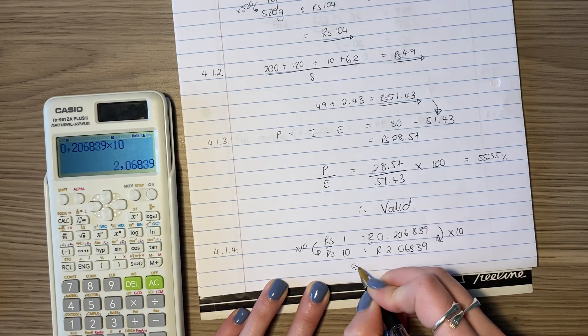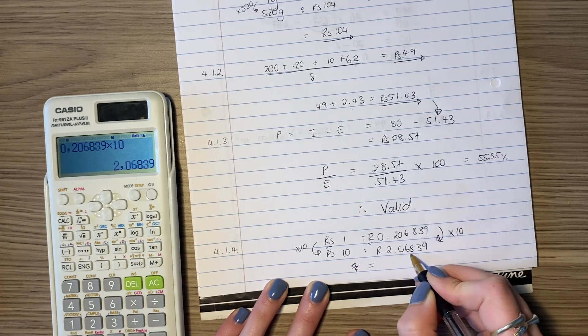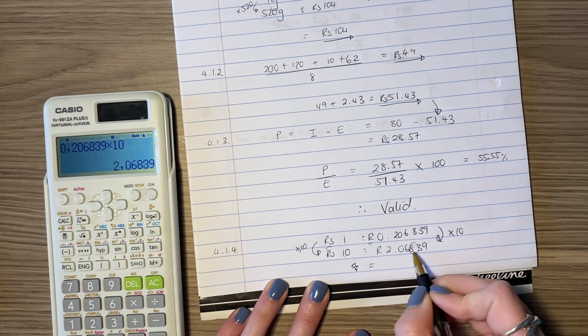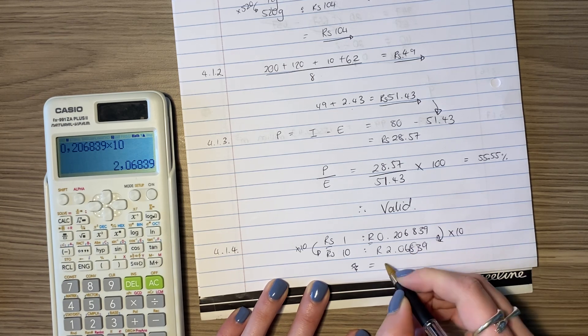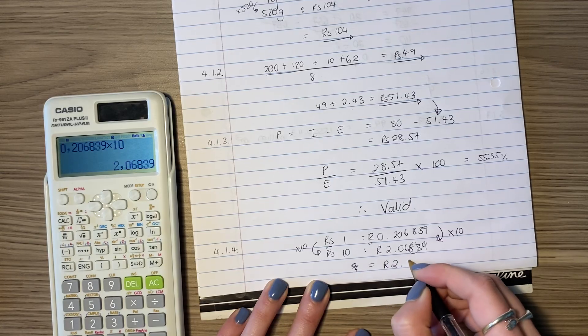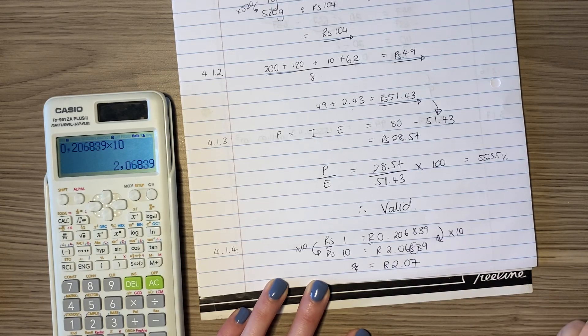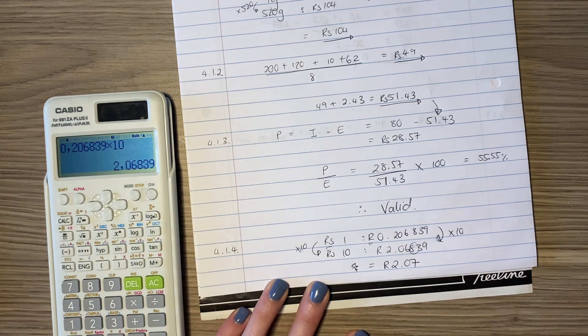But we have to write it in proper answer. Because remember, we can't with rands, we can't have more than two decimals. Look at your third decimal. It's above five. So we're going to round up. So my answer is 2.07. And that is our answer done. And that's this video done. See you in the next one.